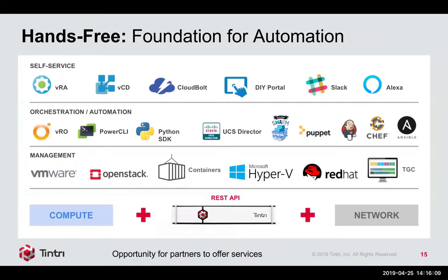Tintri was built for automation from day one. We've had REST APIs from the very beginning, at the layer that matters most — the virtual machine object we care about. We can put a self-service front end on top of it: VRA, VMware vRealize Automation, Cloud Director, CloudBolt, Slack, Alexa — it really doesn't matter, you can build your own portal. These portals don't need lots of logic to do simple tasks like provisioning a VM or replicating one, because it all looks like one pool. We've got orchestration automation and plug-ins for ecosystem players — PowerCLI, vRealize Orchestrator, UCS Director, and lots of other tools.